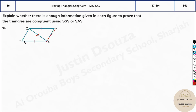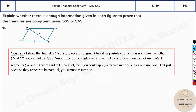Can we prove RS and TS to be congruent, or find any congruent angle? We do not have enough information — we have just two sides that are equal. So it might be congruent, but we currently do not have any information that proves congruency. You cannot show that triangles QTS and SRQ are congruent by either postulate, since it is not known whether QT and RS are congruent. And since none of the angles are known to be congruent, you just can't determine congruency.